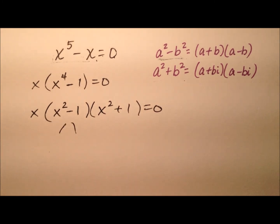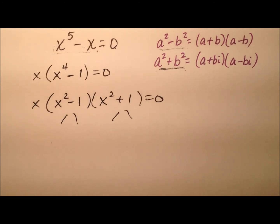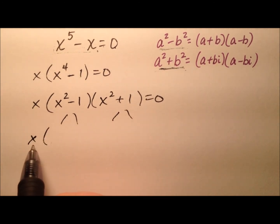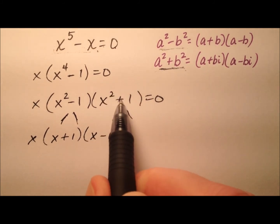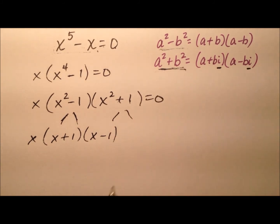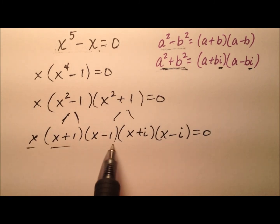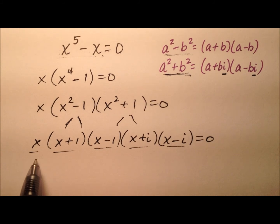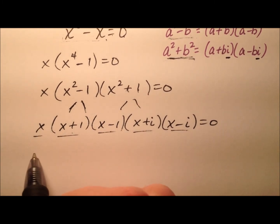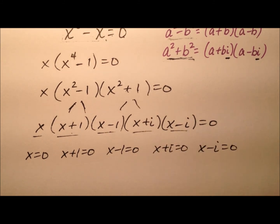The square root of x to the fourth is x squared, and the square root of one is just one, so we have x squared minus one and x squared plus one. x squared minus one is another difference of squares, and x squared plus one is our sum of squares hidden inside. So x squared minus one factors to x plus one and x minus one, and x squared plus one factors using the sum of squares to x plus i and x minus i. So we have one, two, three, four, five factors, meaning there could be up to five solutions. Setting each factor equal to zero: x equals zero, x plus one equals zero, x minus one equals zero, x plus i equals zero, x minus i equals zero.